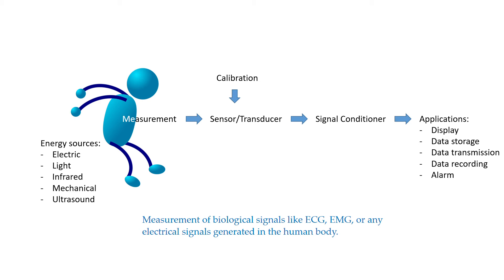We have several applications that we can use via biomedical instrumentation. First, display — it is used to provide a visual representation for the user of the measured parameter quantity, such as a chart recorder, an electrocardiogram, or an electroencephalogram. Sometimes we have applications in data storage, used to store the data and can be used for future reference. Sometimes we use data transmission, because it is used in telemetric systems where data can be transmitted from one location to another remotely.